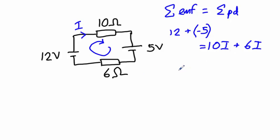So, we can simplify our equation a little bit. We have 7, that's 12 minus 5, equals 10 plus 6, that's 16I.